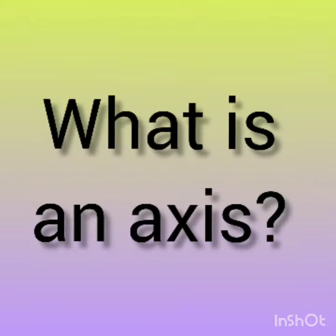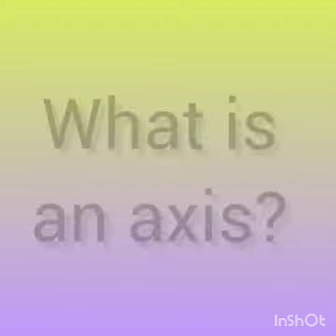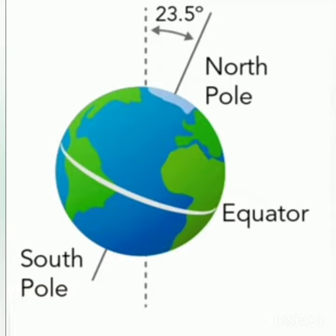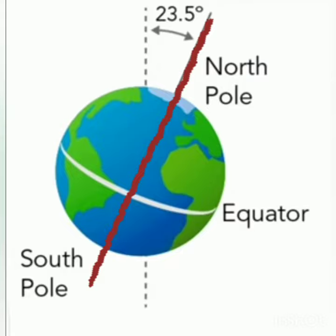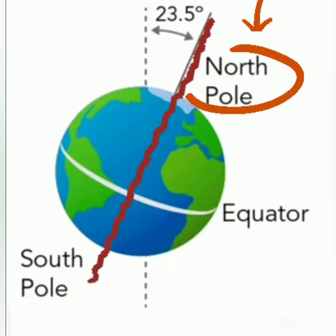What is an axis? Children, imagine a line running in the center of the Earth from the North Pole to the South Pole.